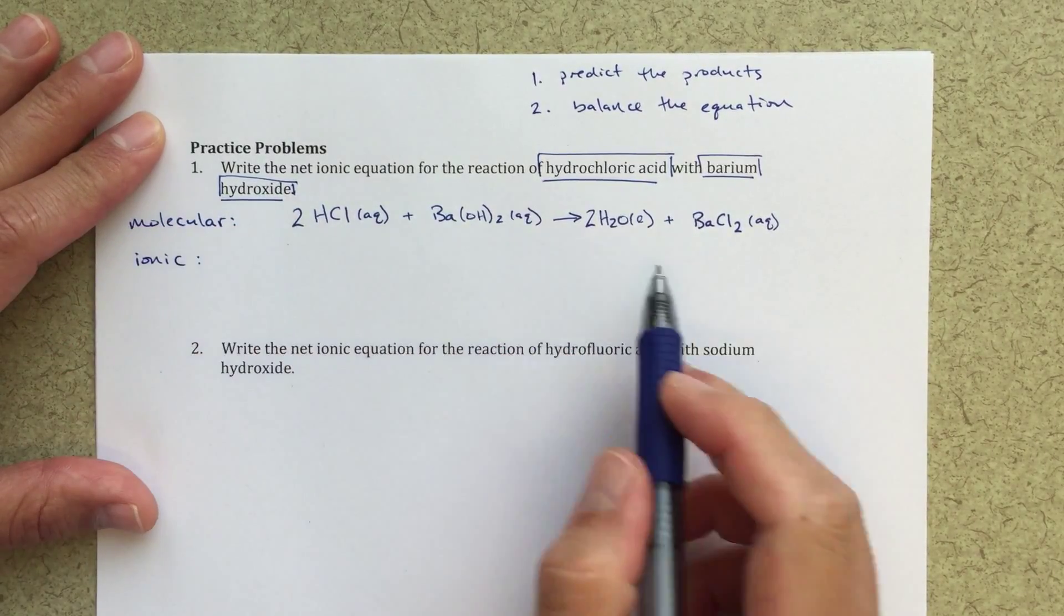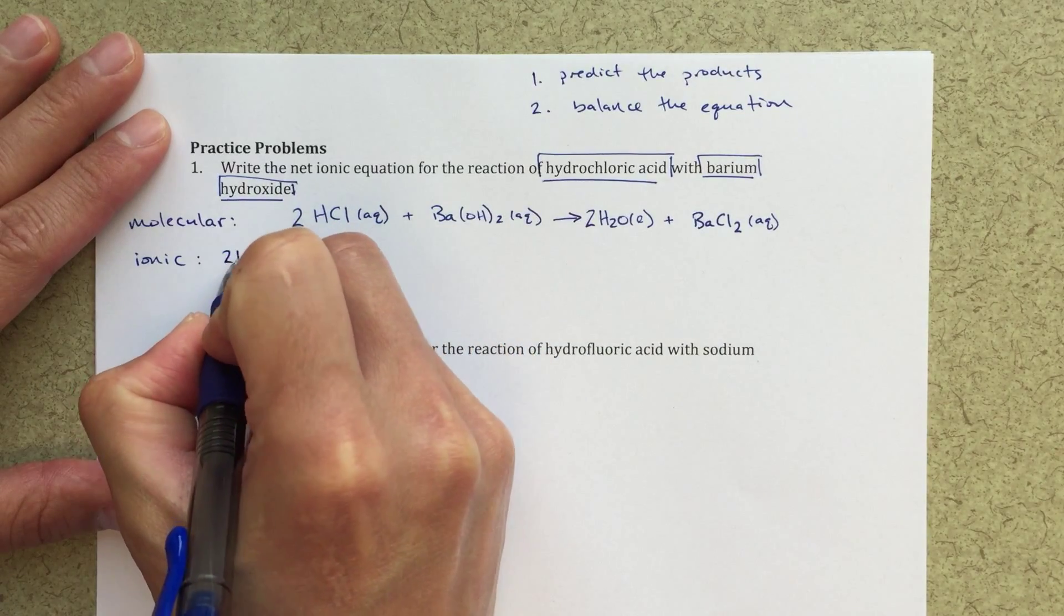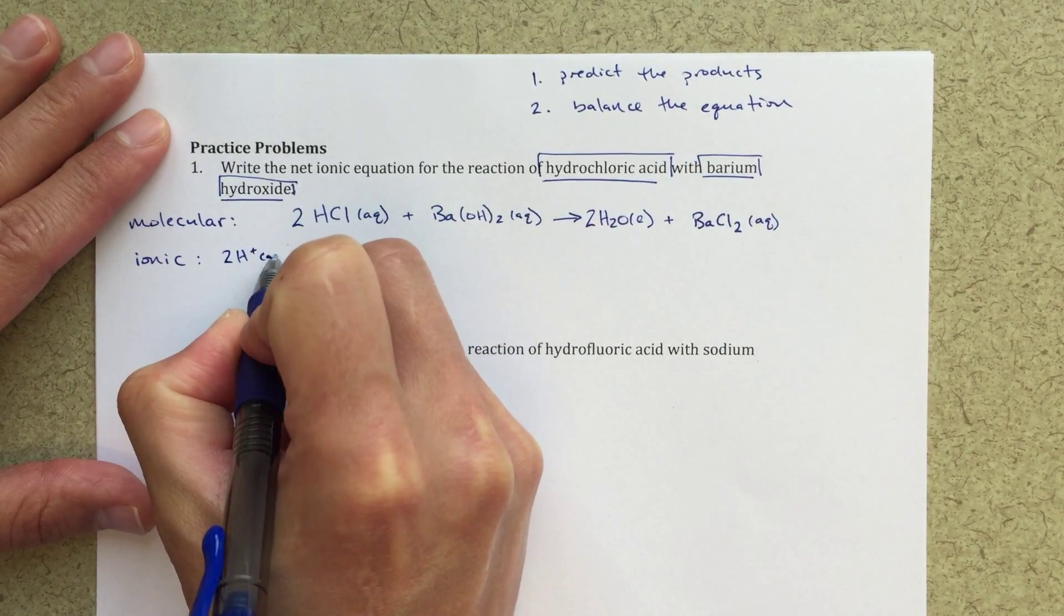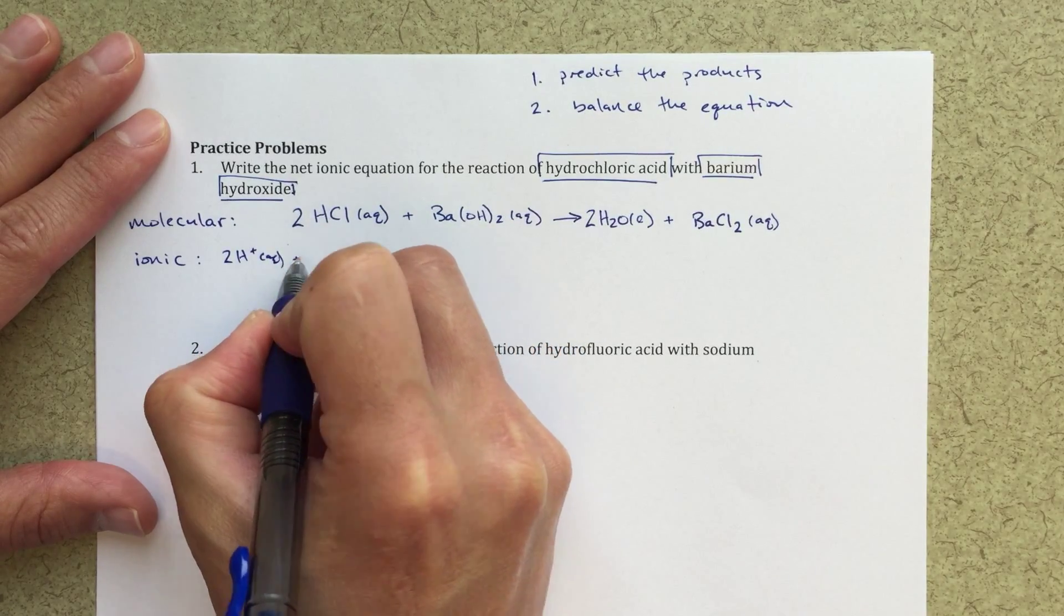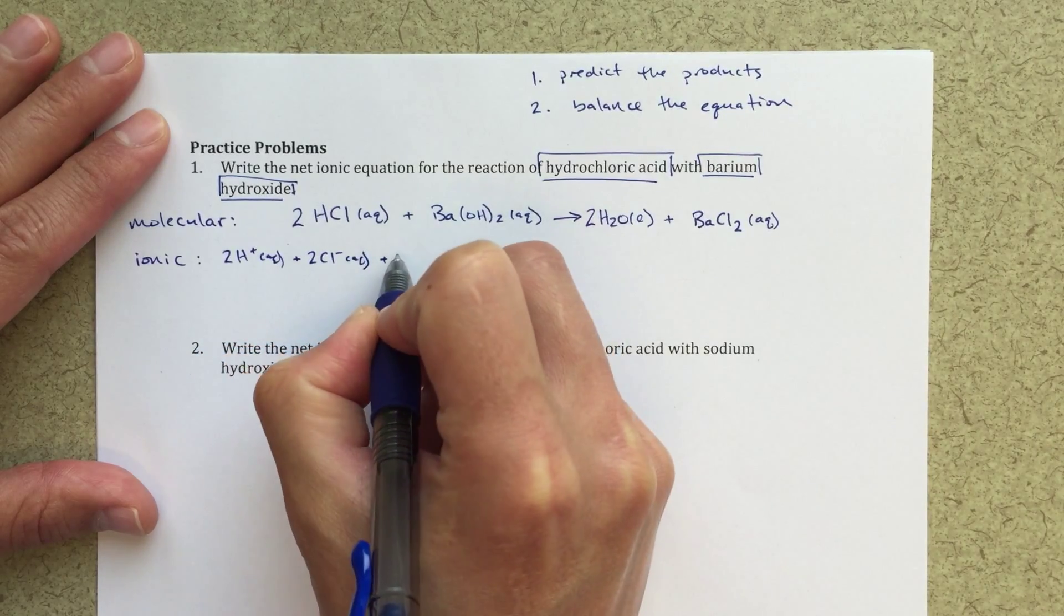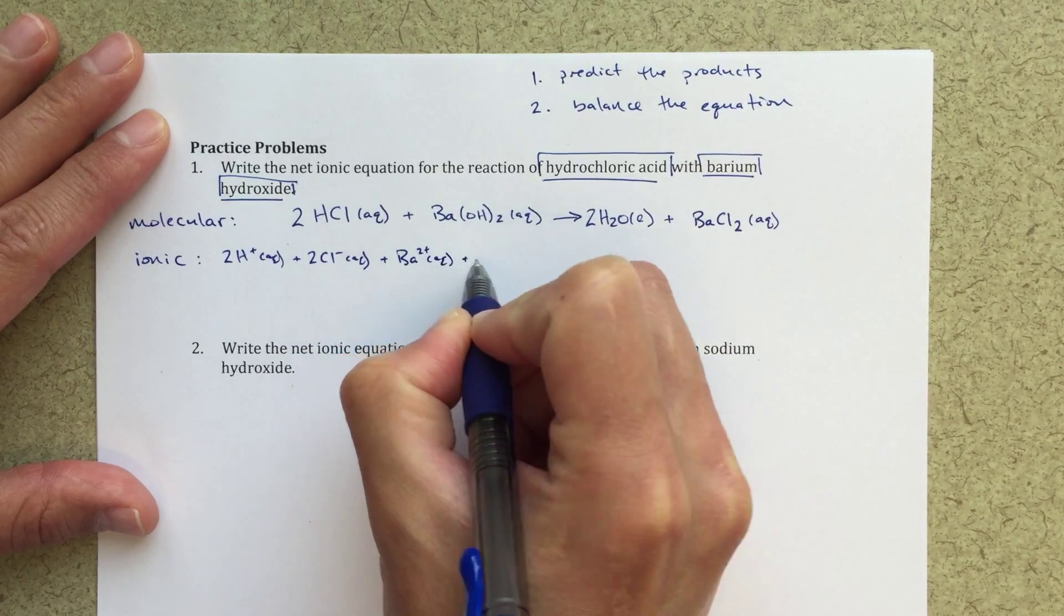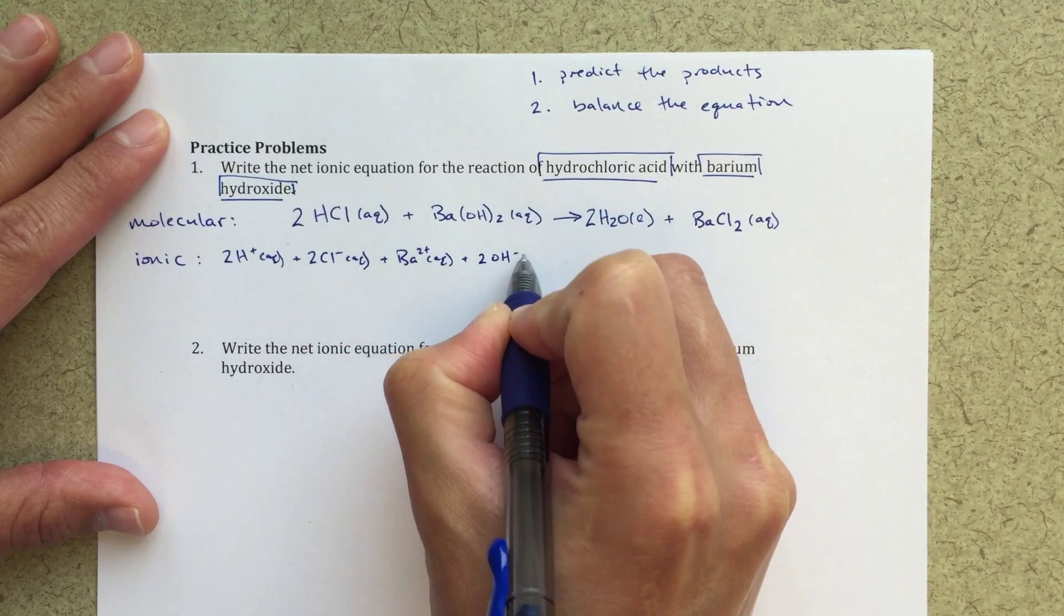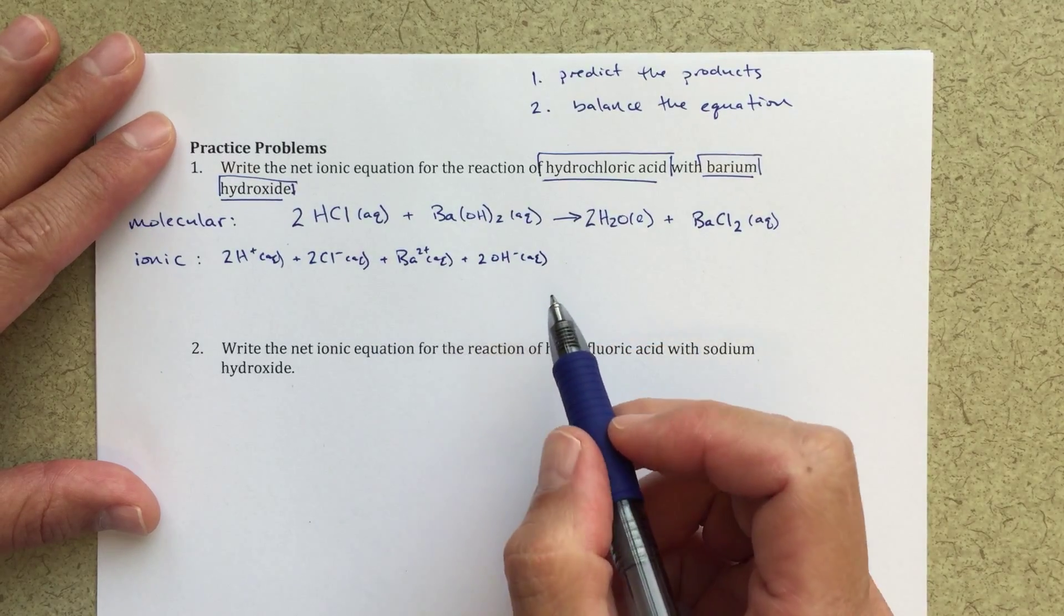This is our molecular equation. Now we can write out the ionic equation. My ionic equation, I'm gonna write out all of these different ions. HCl I know that's a strong acid, therefore it will completely dissociate, so I'll get two H+ since I've got two HCl, plus two Cl- plus barium 2+ plus two of these OH minuses.